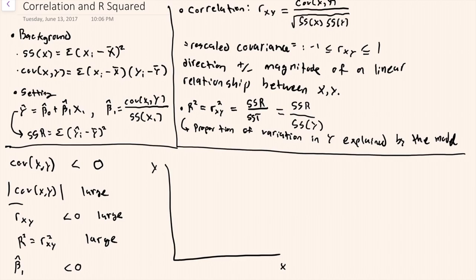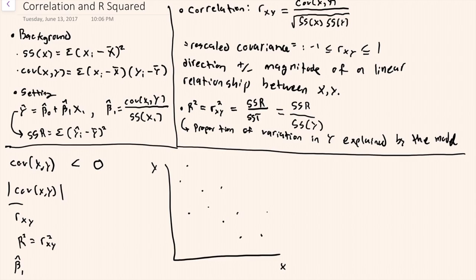Another setting is one where there is a negative relationship between the two variables, but it's less pronounced. That is, if you fit a line to this data, the variation around the line would be greater than in the previous case. In this case, the covariance would still be negative, but the magnitude would be smaller. The correlation would be negative and smaller. The proportion of variation explained by the model would be smaller. And the slope coefficient would still be negative.